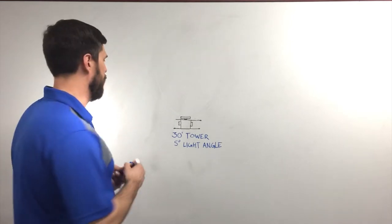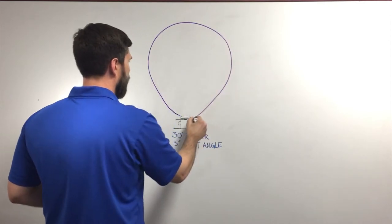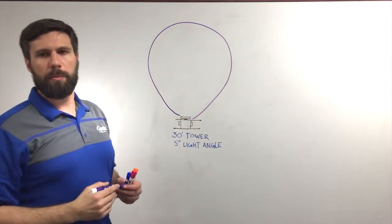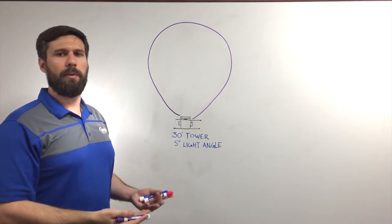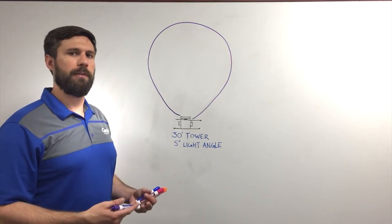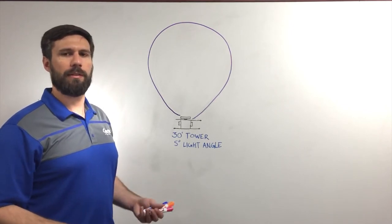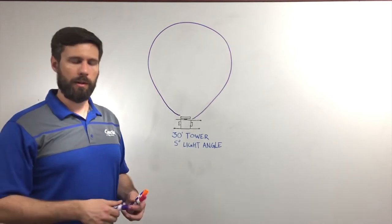So you may see a plot that looks something like this. Everything inside the purple area will be illuminated to a level of about 0.5 foot candles. 0.5 foot candles is enough to notice that there's light there, but it's not considered safe enough to do any meaningful work.